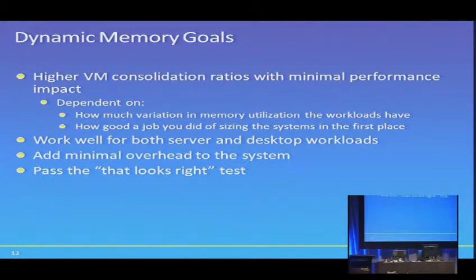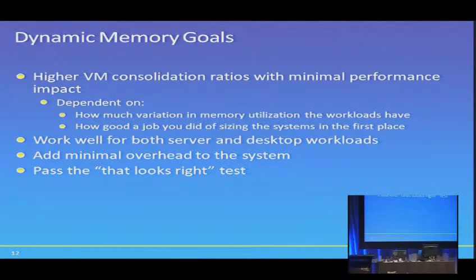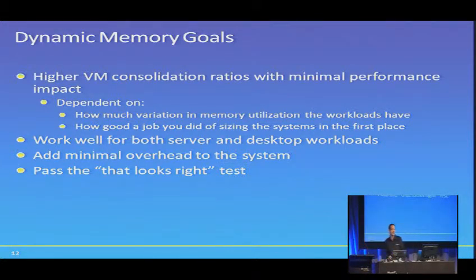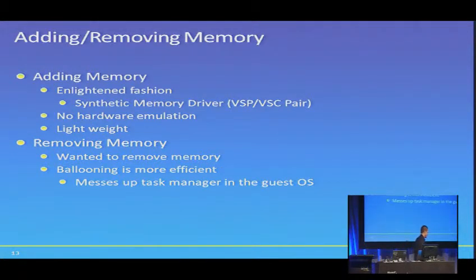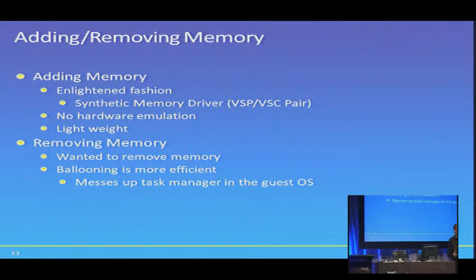The final goal is that it needs to pass the 'that looks right' test. If you thought a server needed a gig and dynamic memory shows it using 1.5 gig, that's one thing — you undersized it. But if it's now using 8 gig, that's another thing altogether. You need to be able to look at what the system is doing, understand what's happening, and have some level of trust that it's doing the right thing. At its core, dynamic memory is about watching what's happening inside your VMs and quickly adding and removing memory so it's in the right place at the right time.